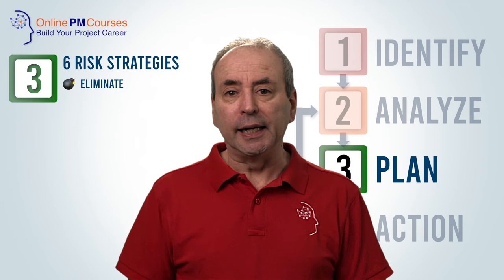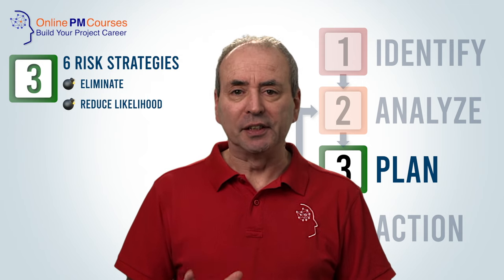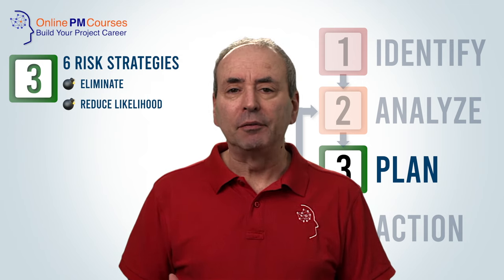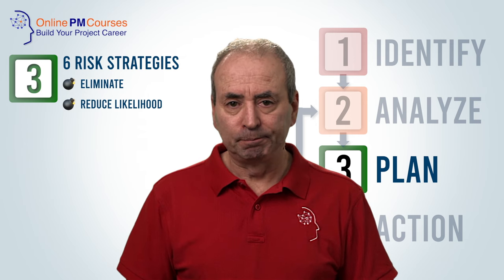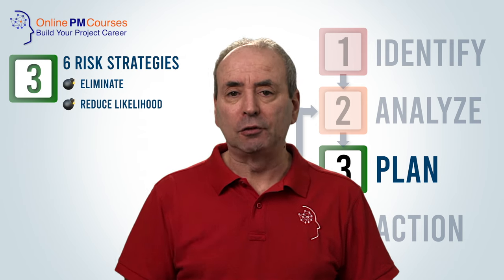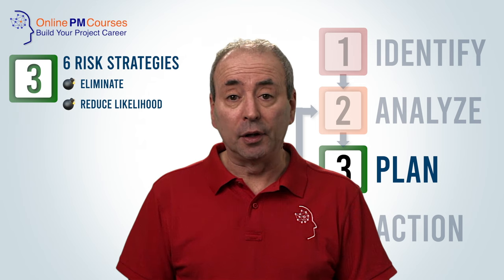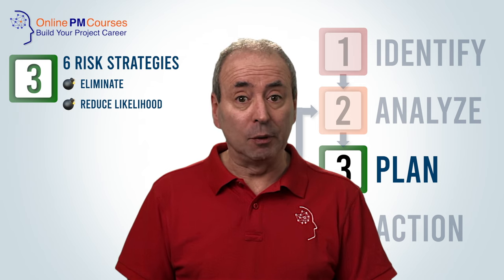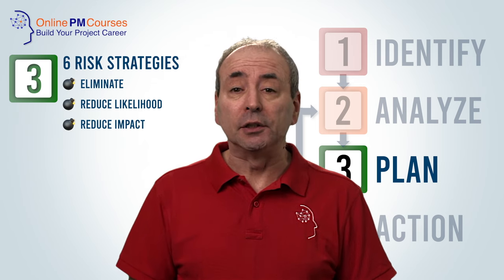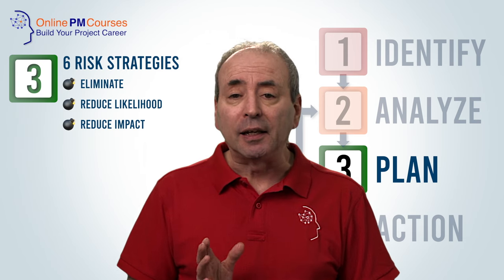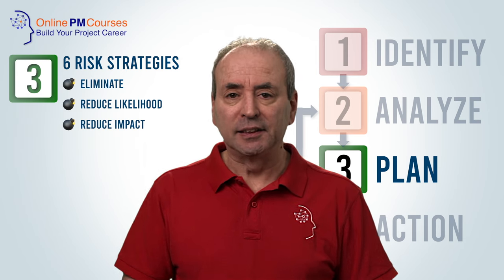The next strategy is to reduce the likelihood that it will happen — do something to make it less probable. Our third strategy, if we can't do those, or if we want to do something else, is to reduce the impact if it does happen, to make it less serious.